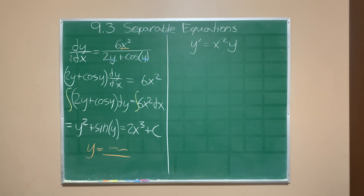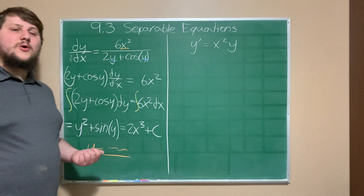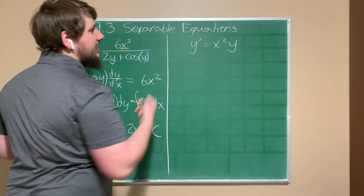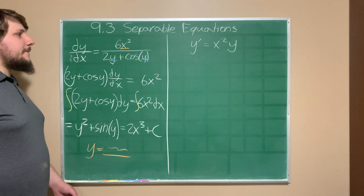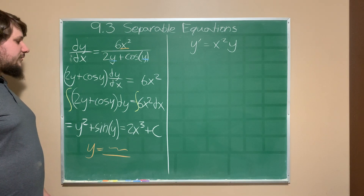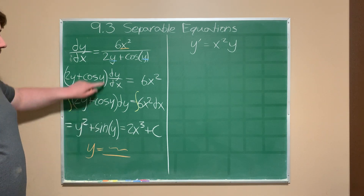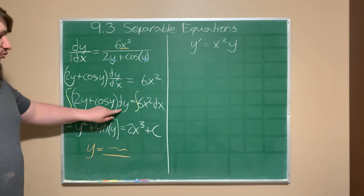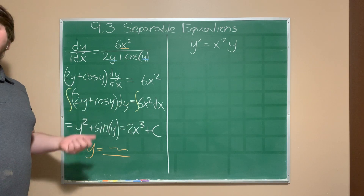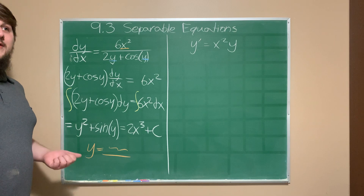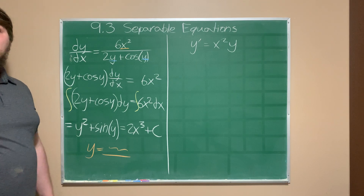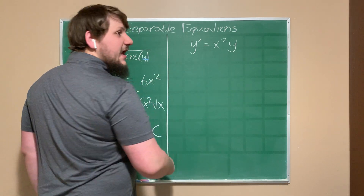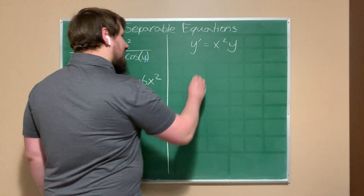We have y′ = x²y. This is written in Newton's prime notation, where the prime means the first derivative. In order to use separability, we want to use Leibniz notation — dy/dx — so we can treat it like a fraction and split up our differentials. The first step whenever you see a differential equation in Newton's notation is to rewrite it in Leibniz notation.